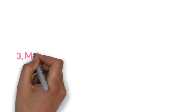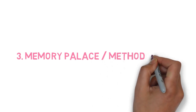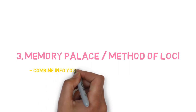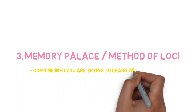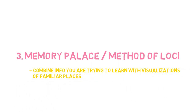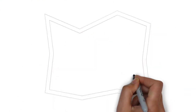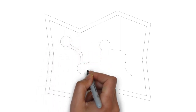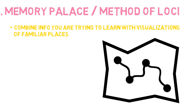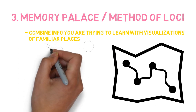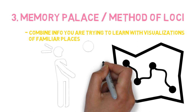Next is the memory palace, or method of loci. For those of you who are not familiar, this is where you combine the information you're trying to learn with visualizations of familiar places, taking advantage of spatial memory. Generally, you move through the familiar place on a route, which is more effective than just being stationary. For example, you could imagine waking up in your bedroom, walking downstairs, and in the process visualizing multiple events happening. Each of these events is tied to a certain concept or element that you are trying to memorize. By having this vivid memory, you're better able to recall the information at a later date.